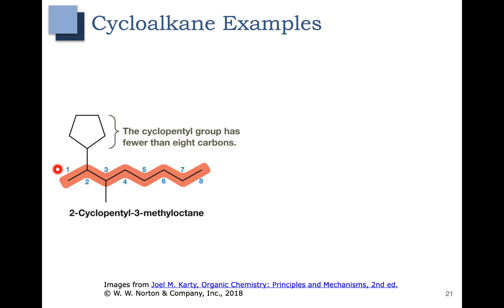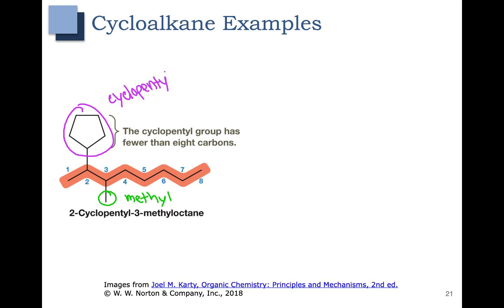In this case the parent chain is 8 carbons, so we have an octane. Our substituents are a methyl group and a cyclopentyl group at position 2. We number from the left to put the first substituent at position 2. If we number from the right we won't get the substituent until position 6. 'Cyclo' is involved in the alphabetical ordering, so cyclopentyl is placed before methyl when we put all of this together.